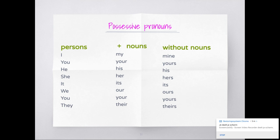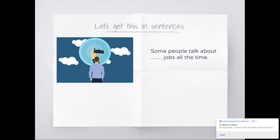So you have plus nouns and you have without nouns. Then 'my' becomes 'mine,' 'your' becomes 'yours,' 'his' stays 'his,' 'her' becomes 'hers,' 'its' stays 'its,' 'our' becomes 'ours,' 'your' becomes 'yours,' and 'their' becomes 'theirs.' Okay, let's have a look if you can put it into sentences.